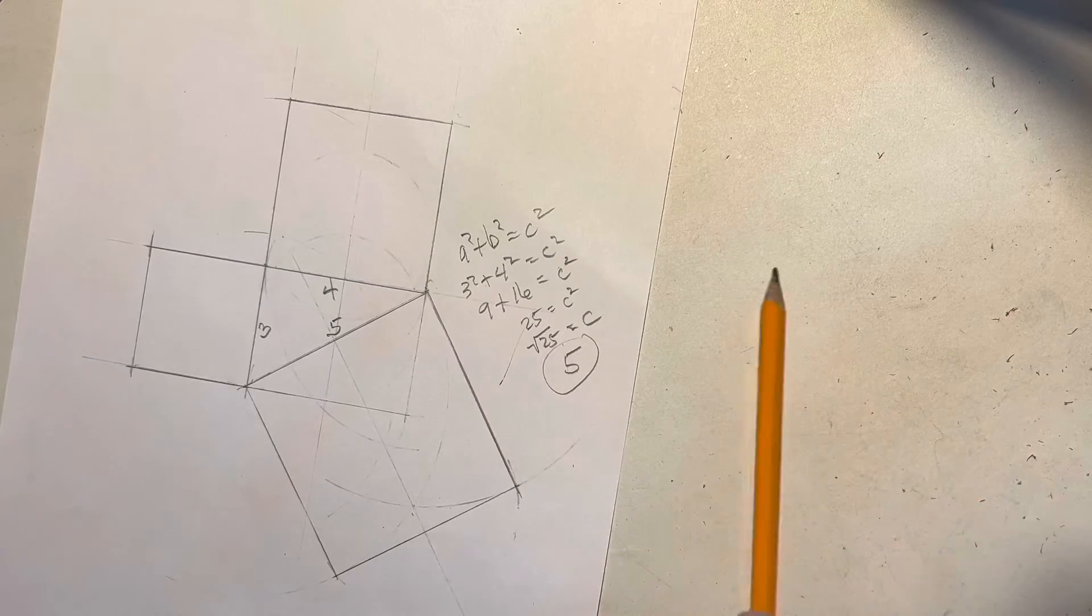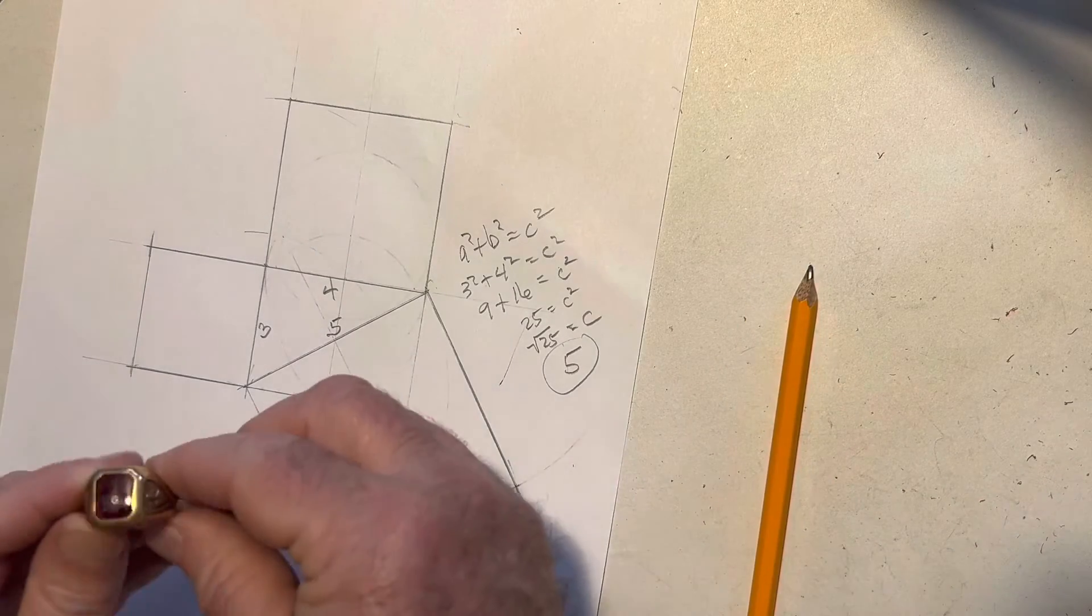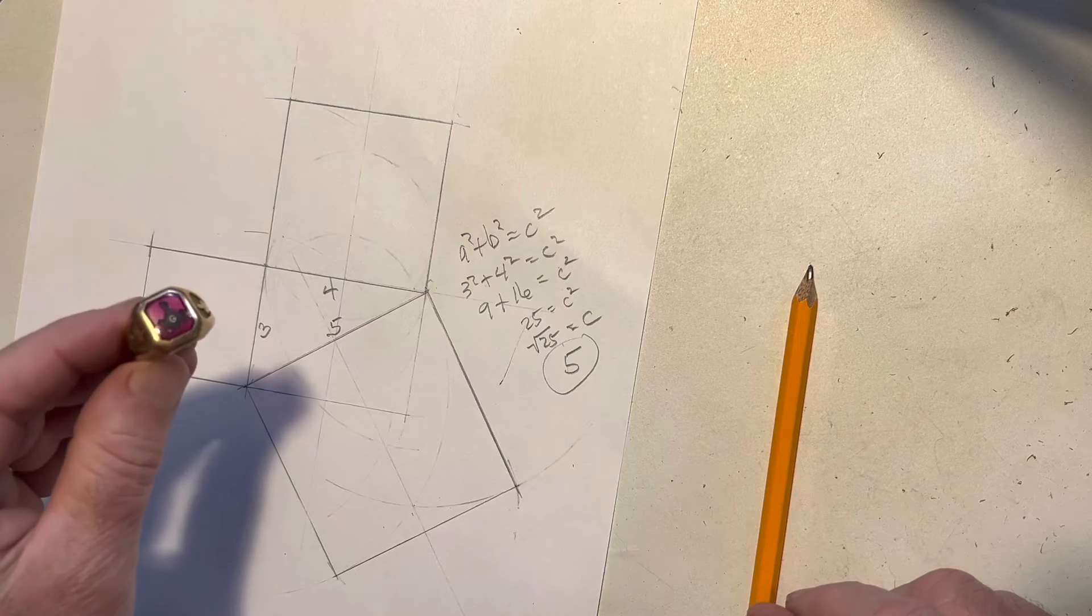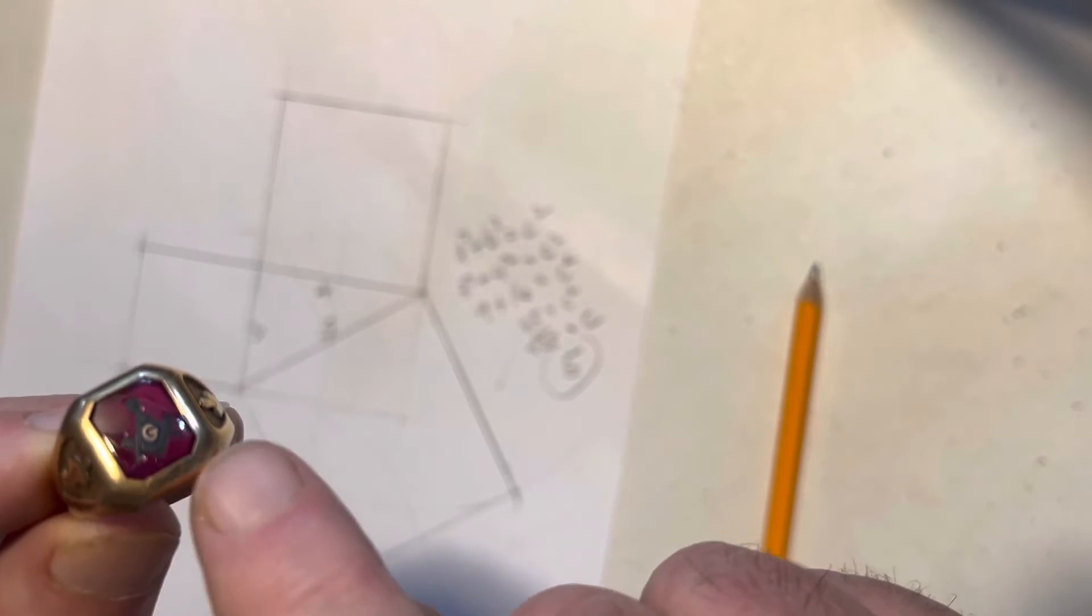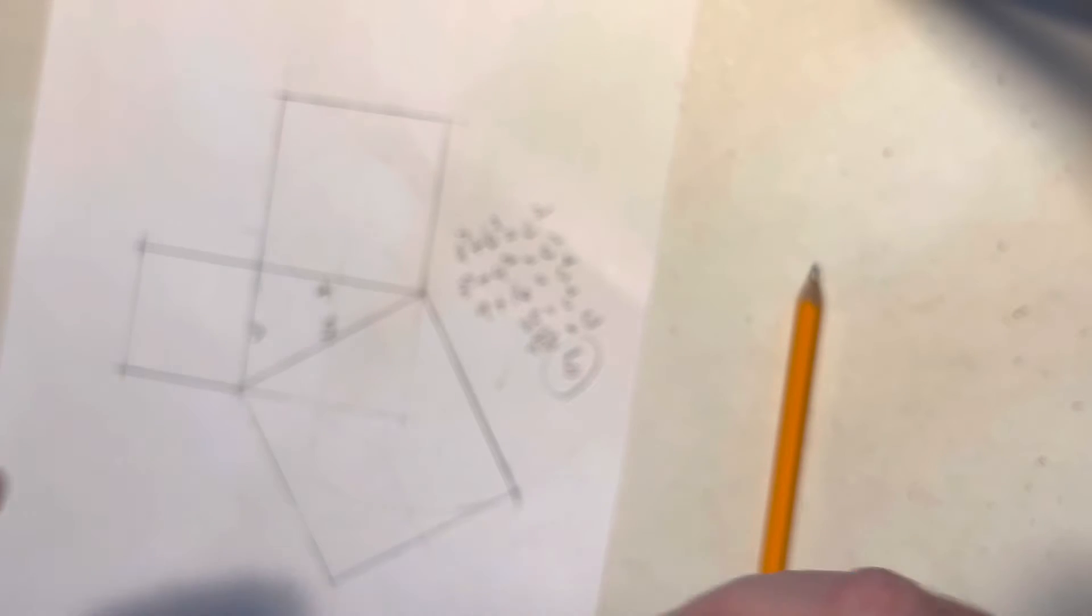We've got this Masonic ring. This belonged to my dad. It has the compass and the angle measurement in the ring. Let's go ahead and do that. Let's recreate this.